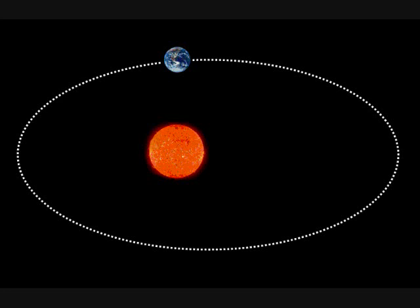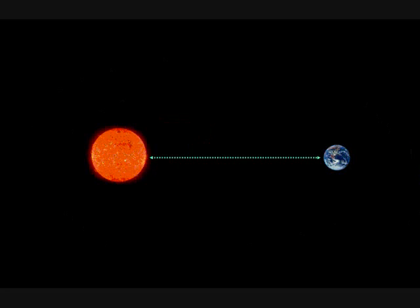I would like you to first imagine that you are floating in space and you can see the earth orbiting the Sun. Because of how the earth orbits the Sun, sometimes the earth is closer and sometimes the earth is farther away, but I would like you to just imagine the average distance between the earth and the Sun in space.